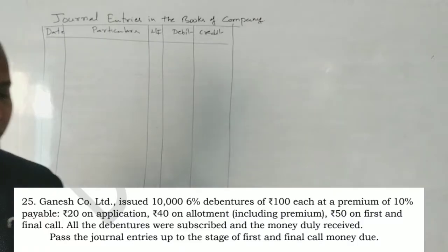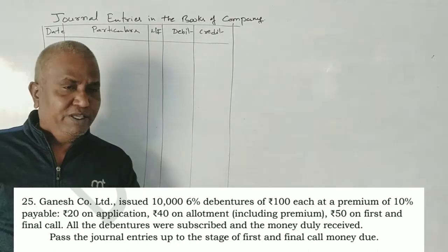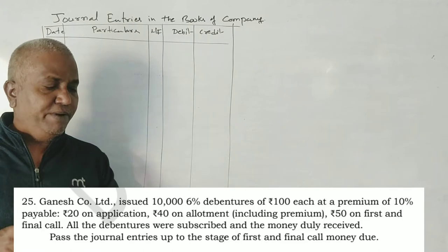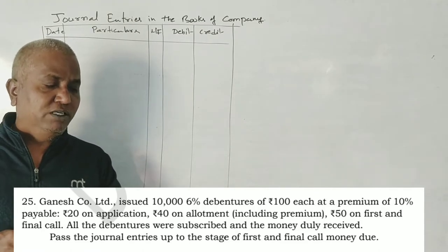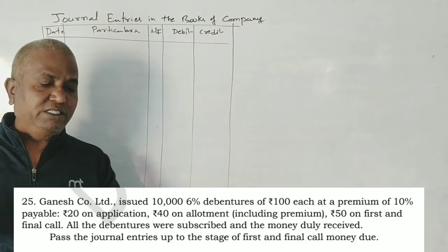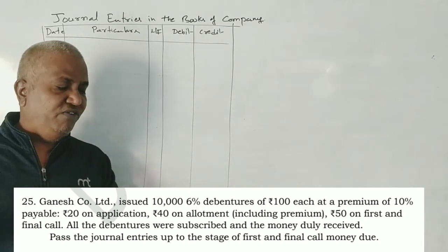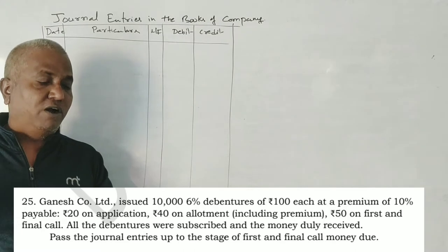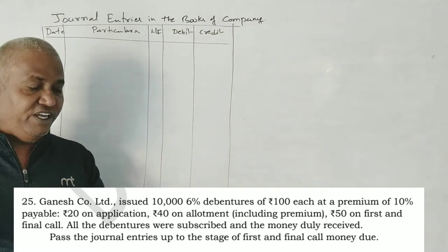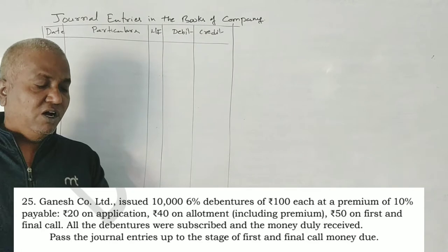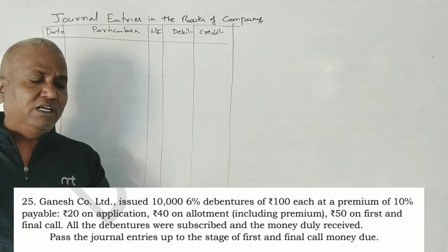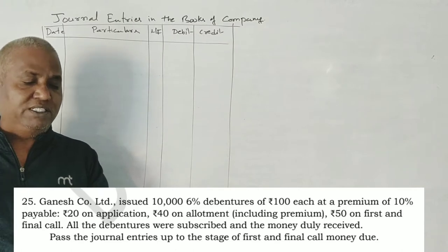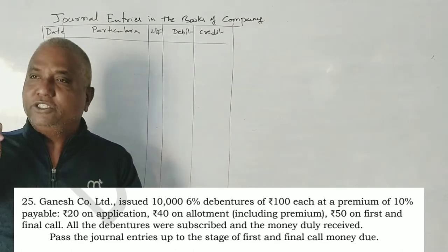See model question paper number one. Question: Ganesh Company Limited issues 10,000 6% debentures of ₹100 each at a premium of 10%, payable ₹20 on application, ₹40 on allotment including premium, ₹50 on first and final call. All the debentures were subscribed and the money duly received. Pass the journal entries up to the stage of first and final call.